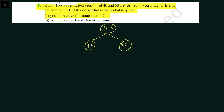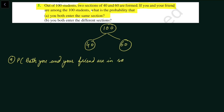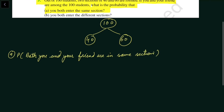Now let us see how we will do this question. We will take the first part: probability that both you and your friend are in the same section. Let us see how we will do it. We will go to section A — I will take 40 students for section A and 60 for section B.